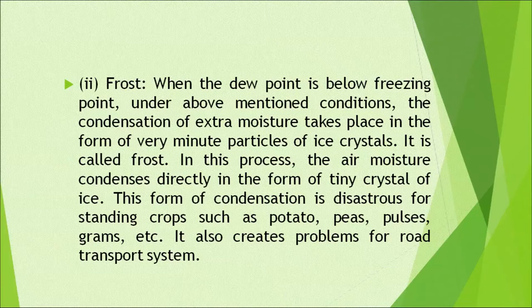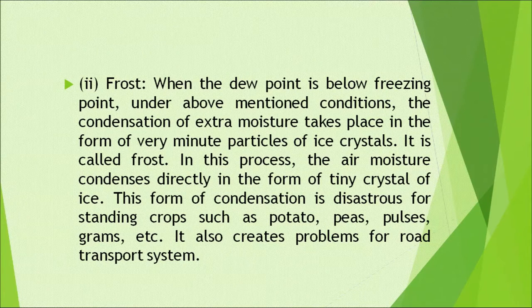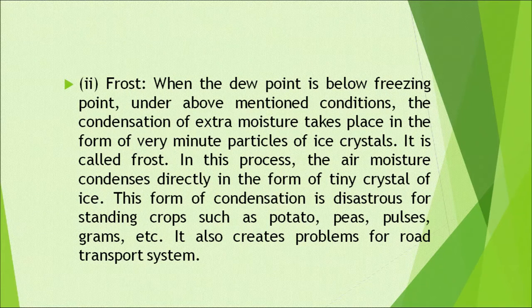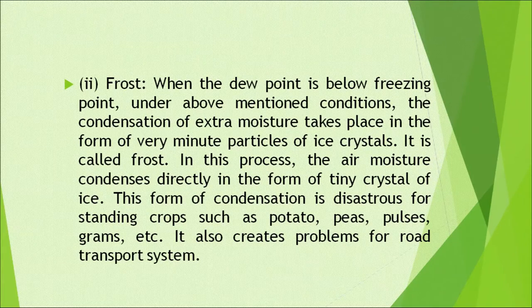Frost: when the dew point is below freezing point under the above-mentioned conditions, condensation of extra moisture takes place in the form of very minute particles of ice crystals — this is called frost. In this process, air moisture condenses directly in the form of tiny crystals of ice. This form of condensation is disastrous for standing crops such as potato, peas, pulses, and grams. It also creates problems for the road transport system.